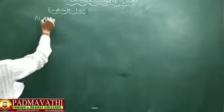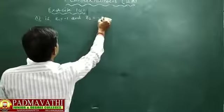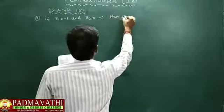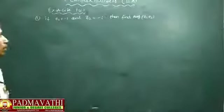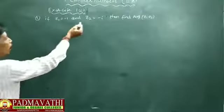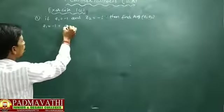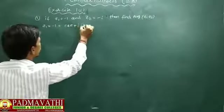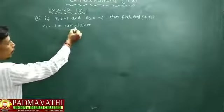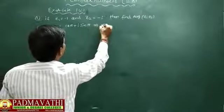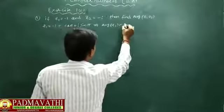Number one: if z1 equal to minus 1 and z2 equal to minus i, then find arg(z1·z2). First of all, we find arg(z1) and arg(z2). z1 equal to minus 1. It is to convert to the polar form: cos π plus i sin π. Since cos π equals minus 1 and sin π equals 0, that gives minus 1. So arg(z1) equals π.